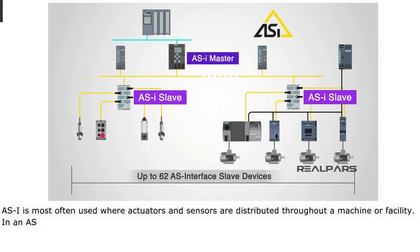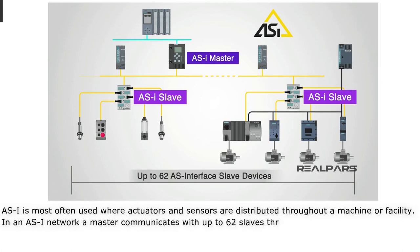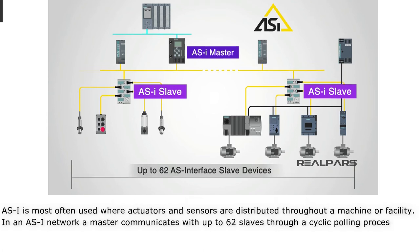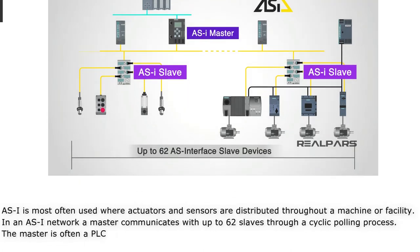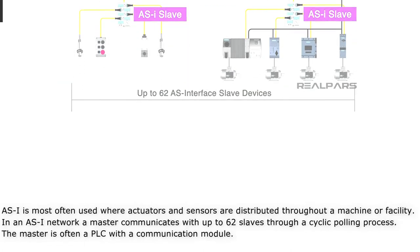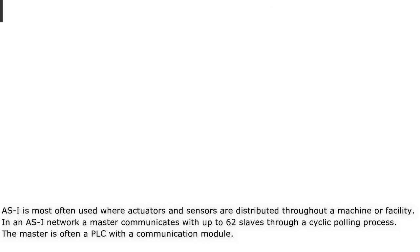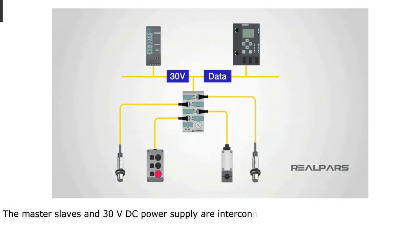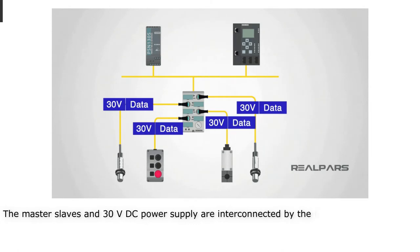In an ASI network, a master communicates with up to 62 slaves through a cyclic polling process. The master is often a PLC with a communication module. The master, slaves, and 30 VDC power supply are interconnected by the two-wire ASI cable.